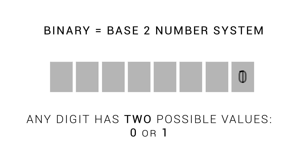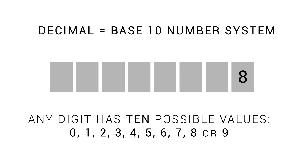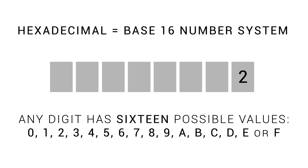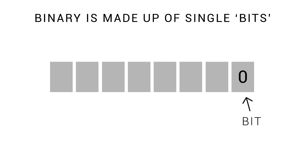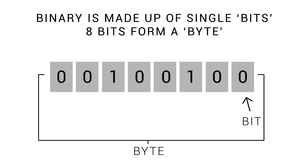Binary is base 2, which means we have two values as we count before we need to add another digit to represent larger values. In everyday life, we use base 10, which can store 10 values per digit. Hexadecimal is base 16, with letters introduced after 9 to give a total of 16 values before we need a second column. With binary, each digit is called a bit, and is either a zero or a one.